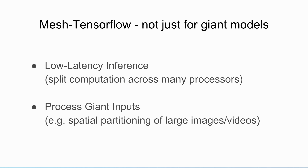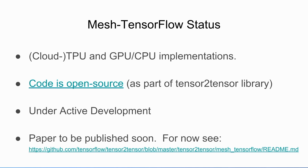This isn't the only reason you need Mesh TensorFlow. You might also want low-latency inference, which you can get by dividing up the computation across multiple processors. Another possible application is having giant inputs like a big image that you can't fit on one core — so you want to split the spatial dimensions across a large array of processors. The current status is that it runs on Cloud TPU, GPU, and CPU. We've got it open sourced, we're working hard on improving it, and we're going to have a paper out soon.